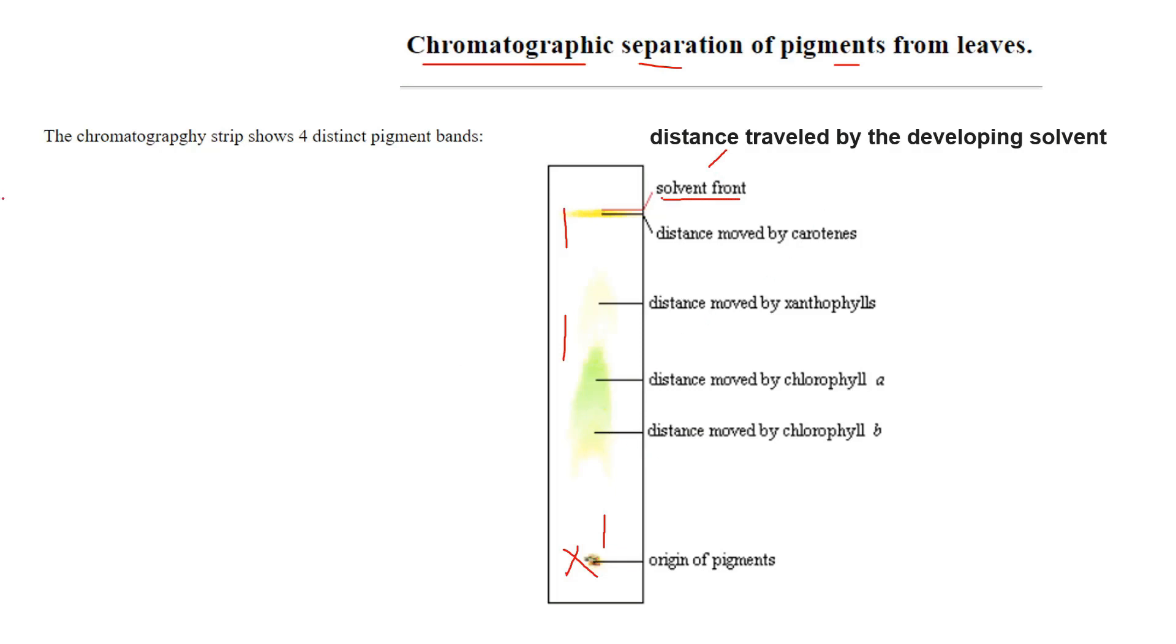You can see four bands have formed. The chromatography strip shows four distinct pigment bands. The bottom band you see is chlorophyll B, which has yellow color, the distance moved by chlorophyll B. Above it you see a green color band, distance moved by chlorophyll A. Above that you see a yellow color band, distance moved by xanthophylls, and here is the distance moved by carotenoids and carotenes.